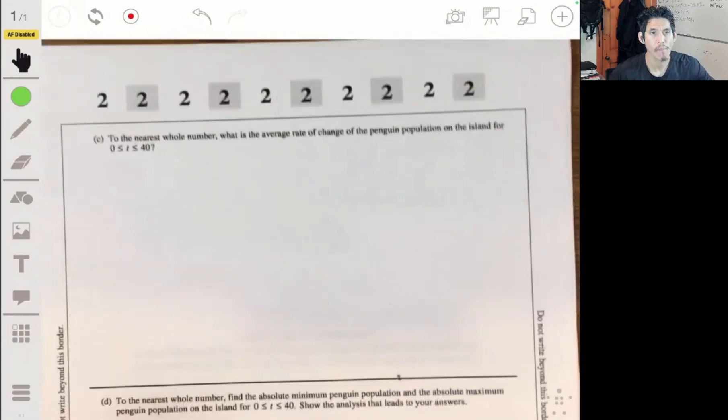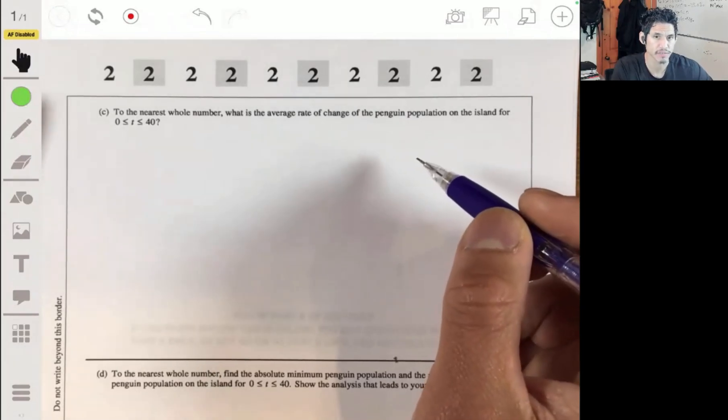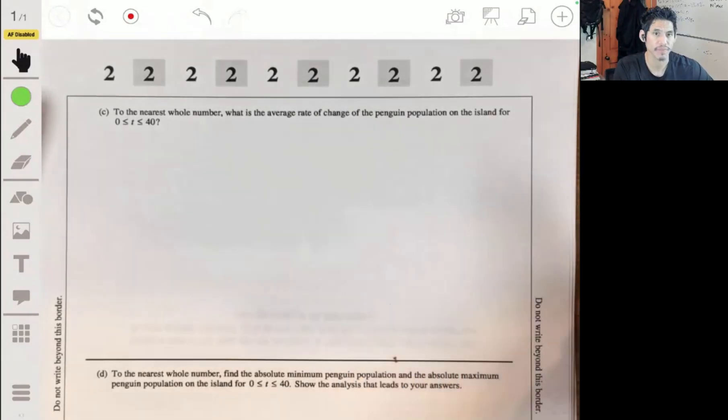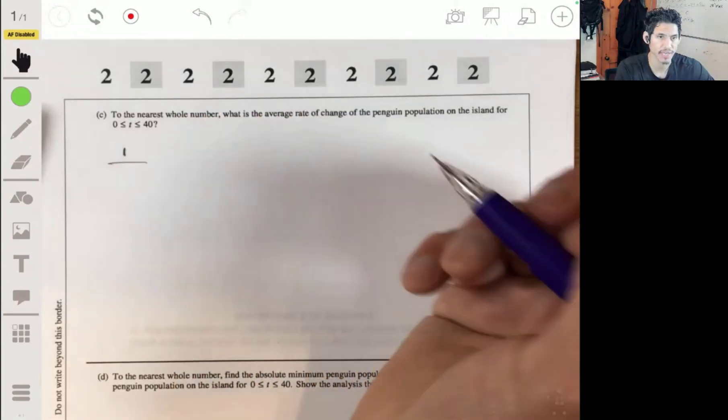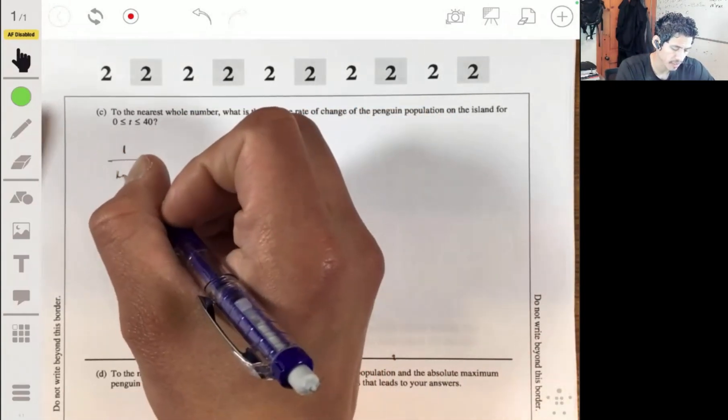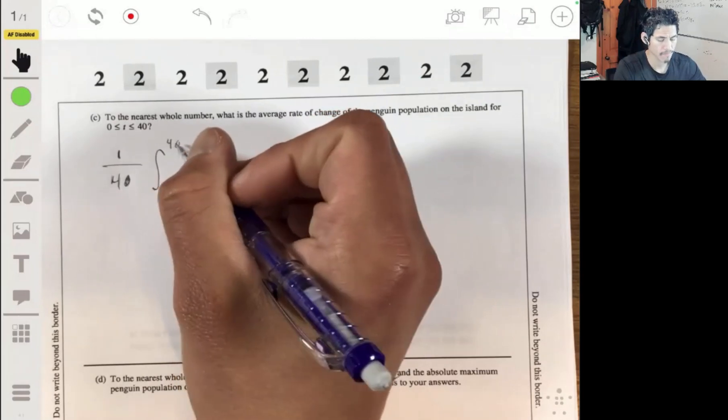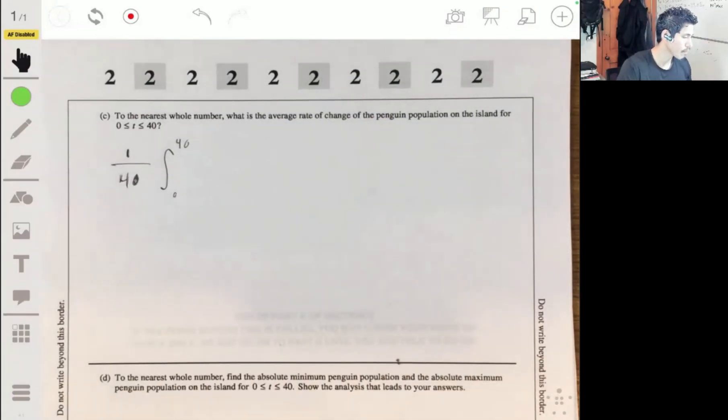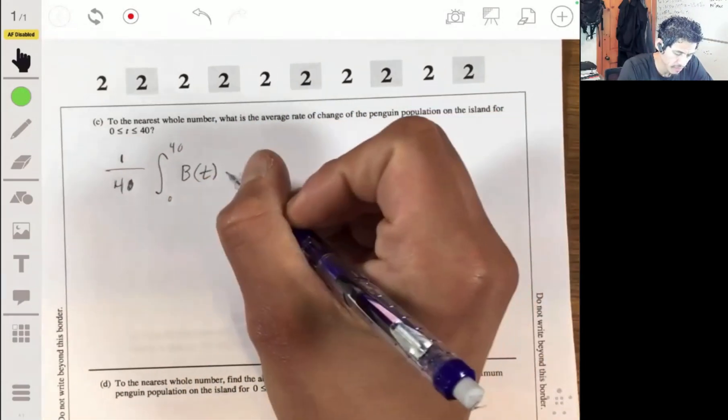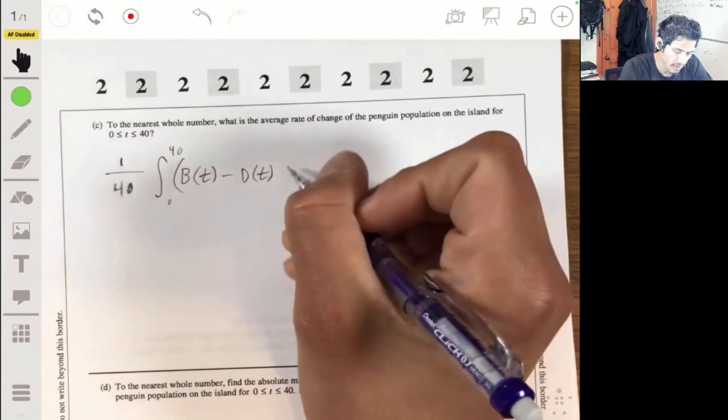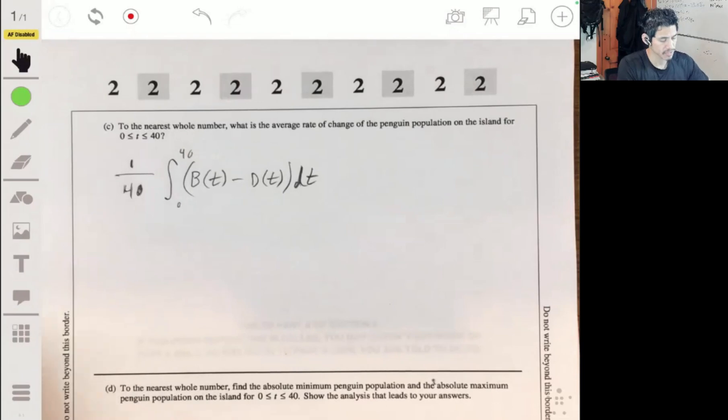Part C: to the nearest whole number, what is the average rate of change of the penguin population on the island for time from 0 to 40? For average rate of change, we're just going to use the average value formula, one over b minus a. That's one over 40 minus 0, or just 1/40 times the integral from 0 to 40. We do what we did in the previous part: birth rate minus death rate, integrate that, and then multiply it by 1/40 or divide by 40.